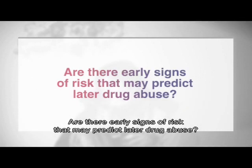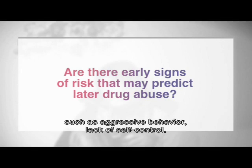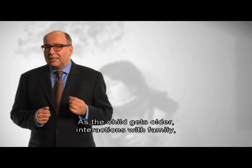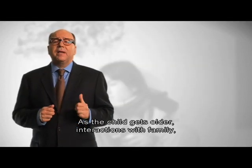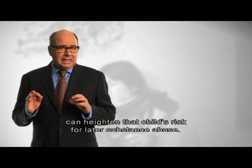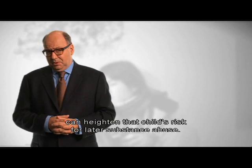Are there early signs of risk that may predict later drug abuse? Some signs of risk can be seen as early as infancy or early childhood, such as aggressive behavior, lack of self-control, or difficult temperament. As the child gets older, interactions with family, at school, and within the community can heighten that child's risk for later substance abuse.